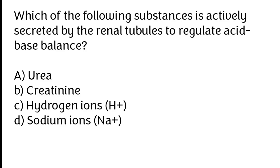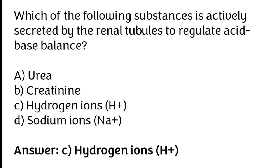The correct answer is option C. Hydrogen ions (H+) are actively secreted by the renal tubules to regulate acid-base balance.